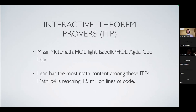Among all of these proof assistants, by far Lean now has the most math content. Mathlib4, which is the standard mathematical library of Lean, is now reaching 1.5 million lines of code — when I prepared my slides two weeks ago that was roughly the number, it may have passed that already.